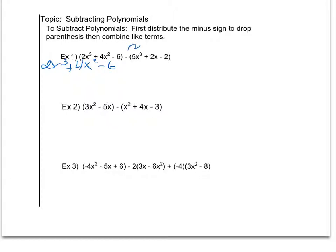Now for my second set, I'm going to distribute the minus sign to every single term. So minus times positive 5x cubed is a minus 5x cubed. A minus times positive 2x is a minus 2x. A minus times a minus 2 is a plus 2.